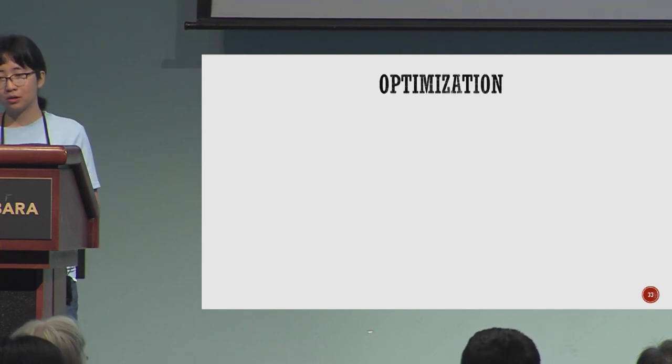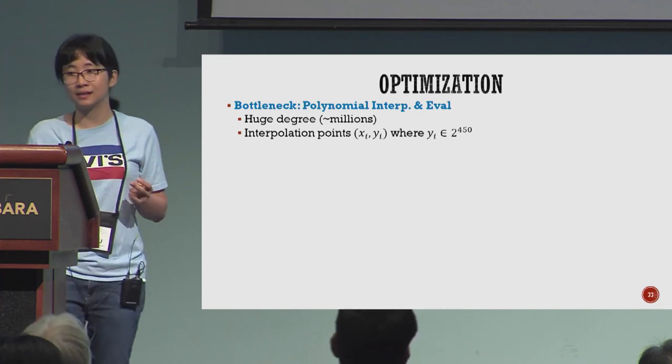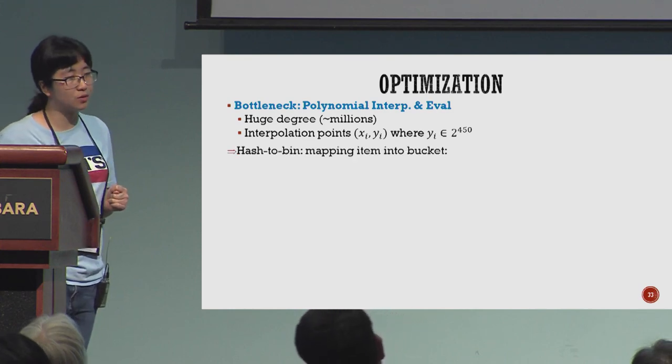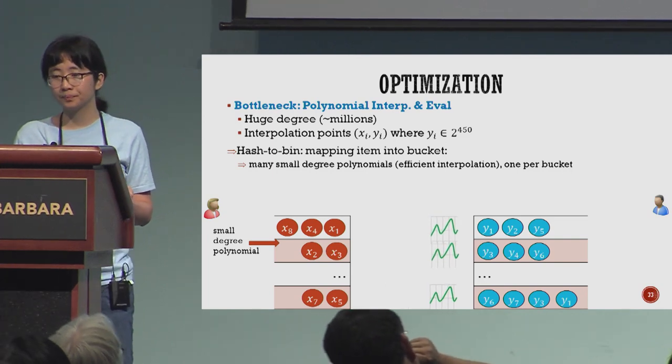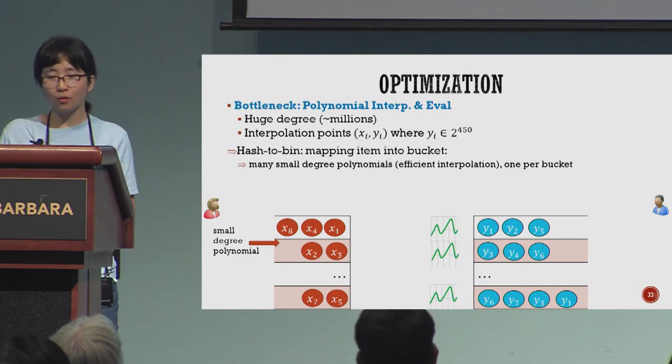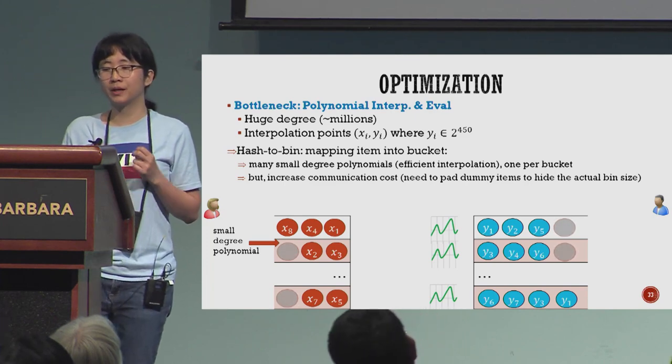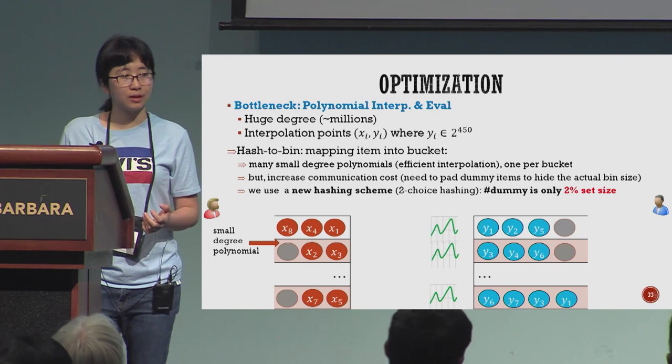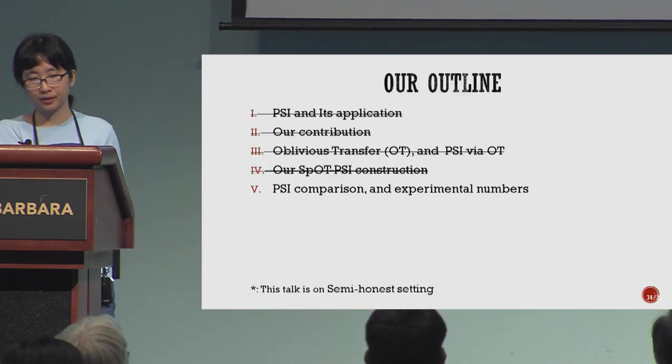The bottleneck of our construction is the polynomial operations. The reason is the field degree and field size are very big. Similar to previous works, we use hash-to-bin schemes to map the items into bins, so we have many small degree polynomials, one per bin, which is very efficient for interpolation. However, we need to pad dummy items to hide the actual bin size, which increases communication cost. We use a specific new hashing scheme so that the number of dummy items is only 2% of the set size.